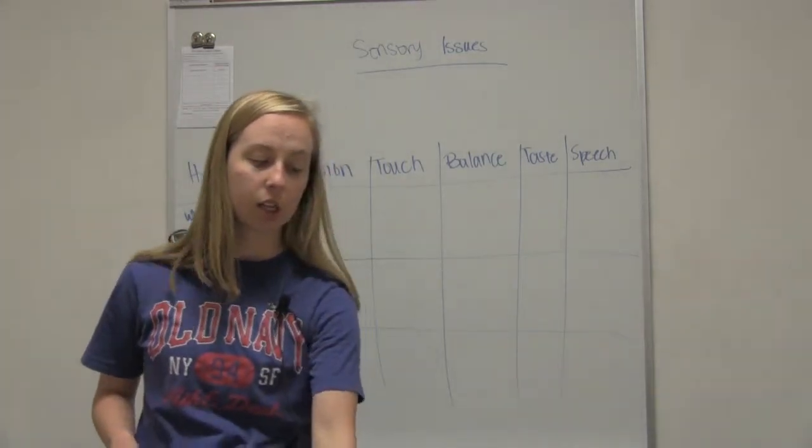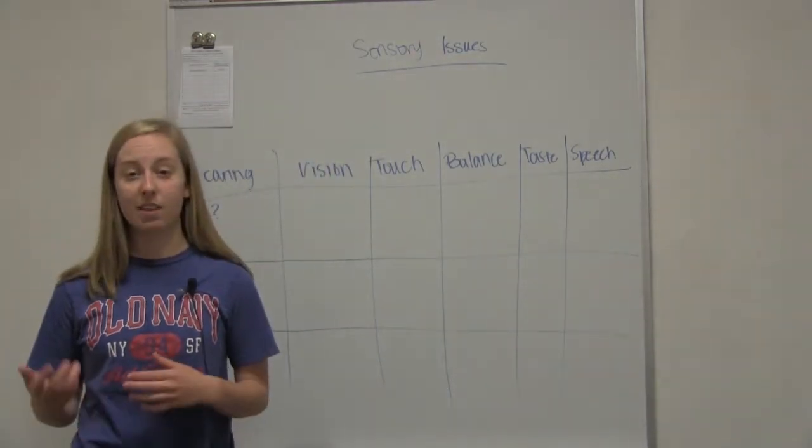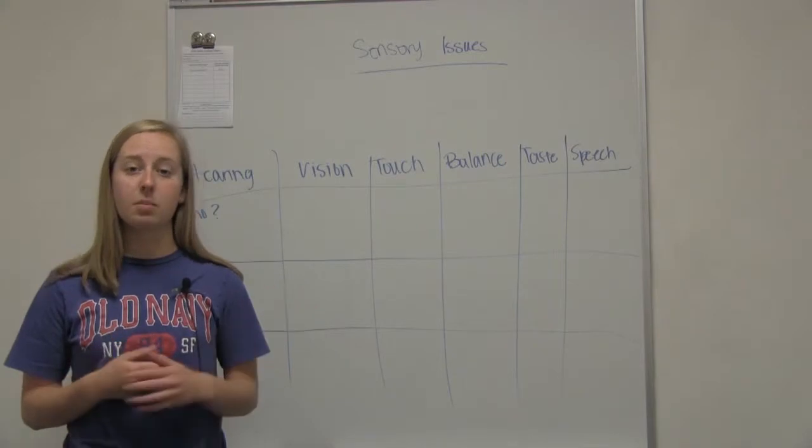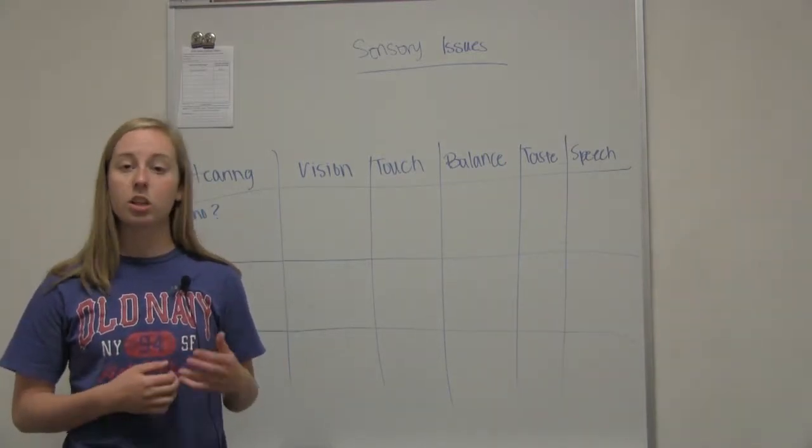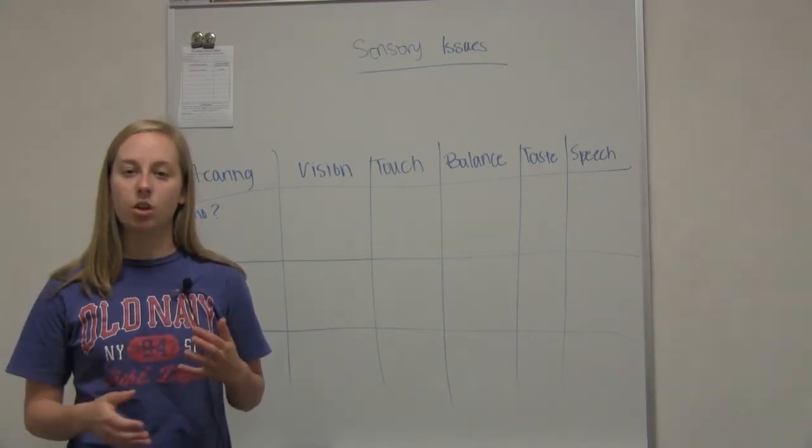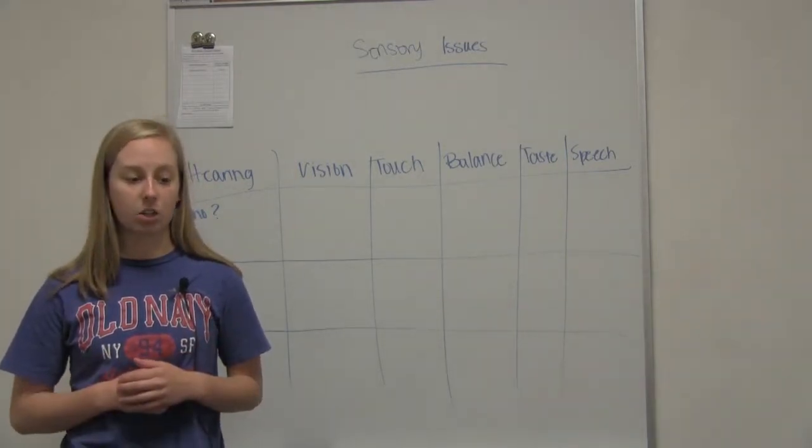Some things that you need to do as a nurse are making sure that you're standing on their better side. If they've got one ear that's worse than the other, make sure they stand on the good side so that they can hear you a little bit better. Make sure that you talk slowly, talk loudly, make sure that you understand that your patient is understanding what you're saying.